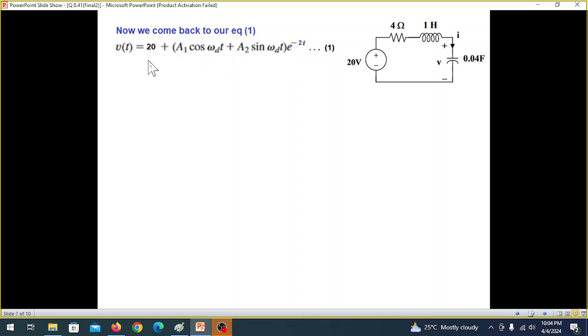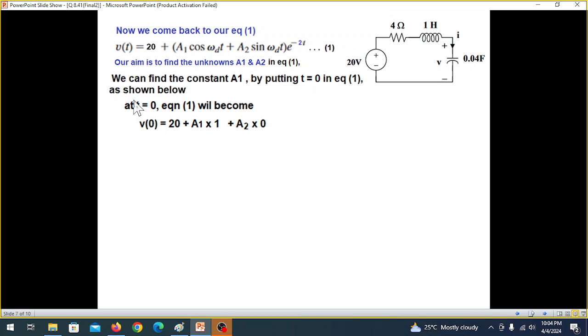Now, coming back to our equation. The aim is to find A1 and A2, these two constants. The technique that is used is that we put t equals 0 in the main equation to find A1. So putting t equals 0 in equation 1. It will be V0, 20. A cos 0, cos 0 is 1. Sine 0 is 0. E to the 0 is 1. So this will be the equation. Plugging in the value of V0, which was 16.667, we can find A1 to be 3.333.